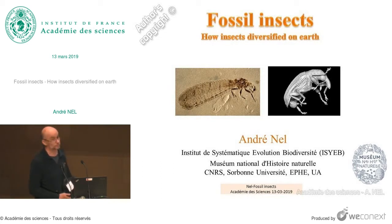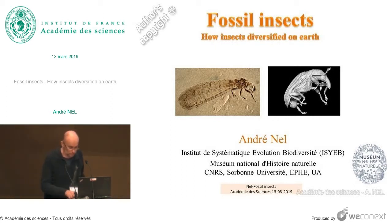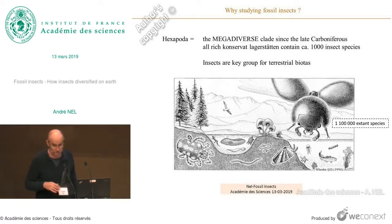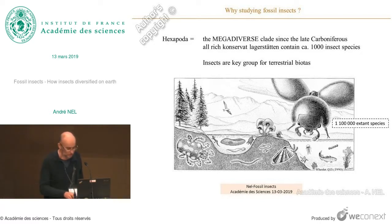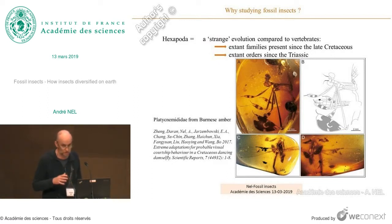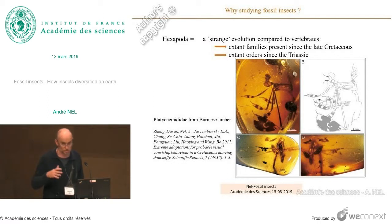I shall try to speak about fossil insects and their evolution in the past. We have to keep in mind that insects are very diverse nowadays, with more than one million extinct species described, and probably three to five times more in fact. For fossils, the general picture is that the evolution of insects compared to vertebrates is very curious, because the extant families are known since the middle or early Cretaceous, more than 100 million years ago, and nearly all extant orders were already present 200 million years ago.